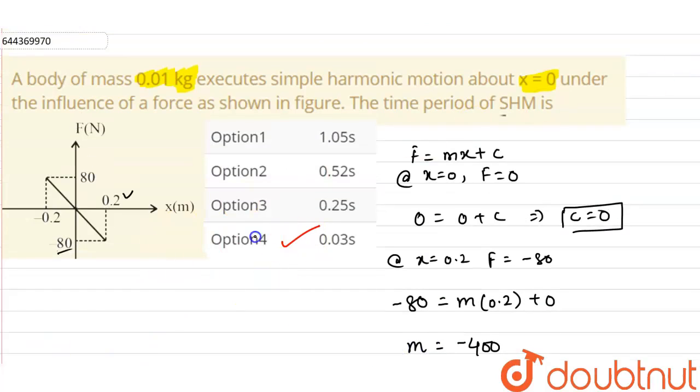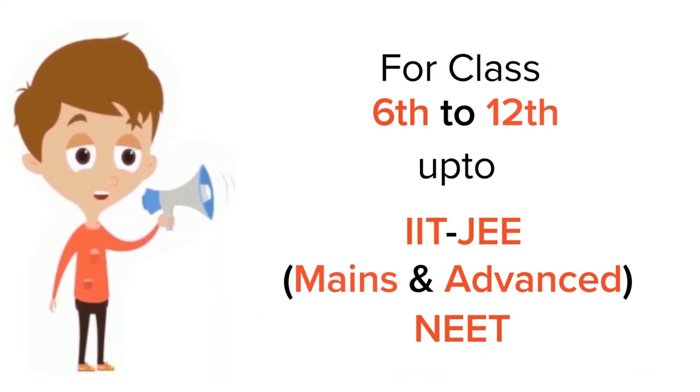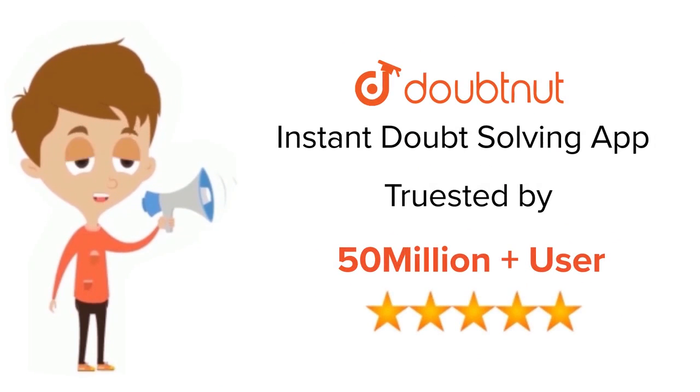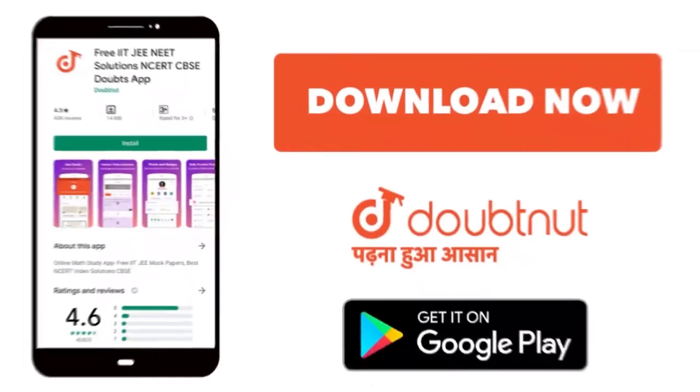So choosing from the options, option four is correct. For class 6 to 12, IIT-JEE and NEET level, trusted by more than 5 crore students. Download Doubtnut app today.